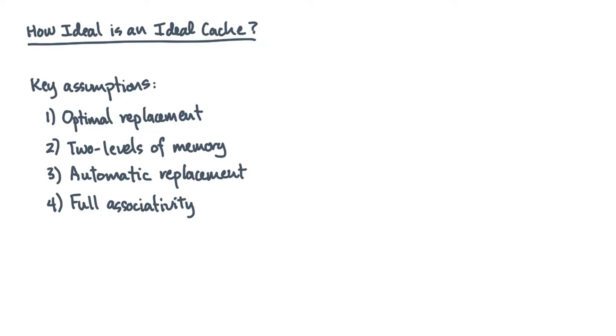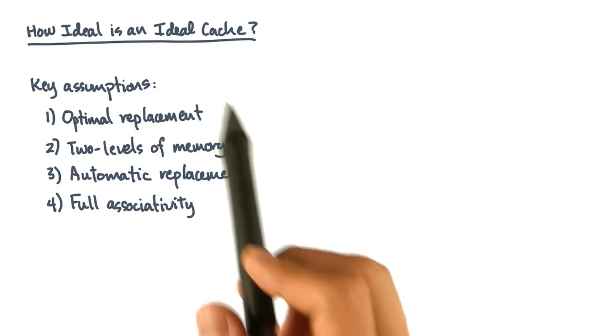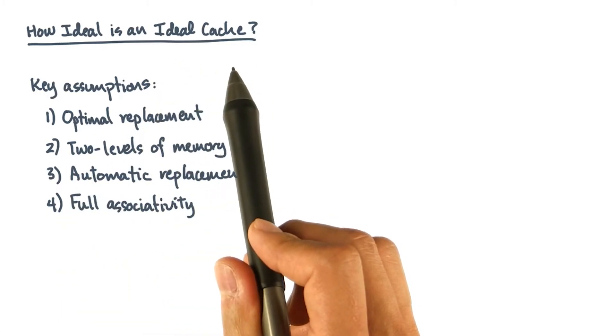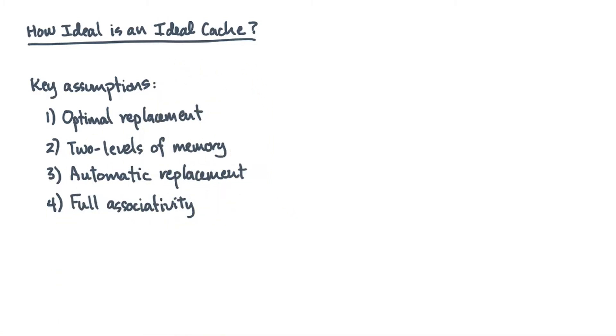So, how ideal is an ideal cache? Does ideal compare to real? I want to go over some facts that help justify the ideal cache model. Remember that the ideal cache model seemed to have some superpowers. So a technical question is, are the assumptions of the ideal cache model too strong?